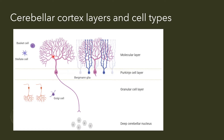Purkinje neurons have beautiful, extensive dendritic processes that extend into the molecular layer of the cerebellum — this is called dendritic arborization, from the Latin word arbor meaning tree. Neighboring the Purkinje cells, you can find Bergmann glia, which are slightly smaller in soma size, with processes also extending into the molecular layer. Bergmann glia is a specialized type of glial cell related to astrocytes that is only found in the cerebellum. Within the molecular layer there are also inhibitory cells called basket and stellate cells that control and regulate the activity of Purkinje neurons.